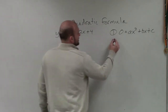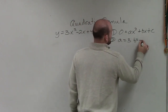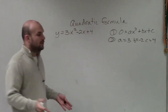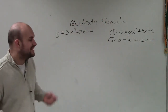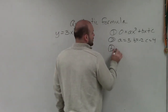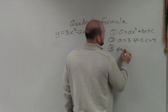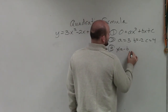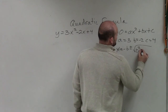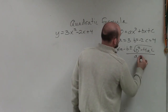The next thing you want to do is identify what a equals, what b equals, and what c equals. Once you identify your a, b, and c, you apply them into the quadratic formula, which is x equals negative b plus or minus the square root of b squared minus 4ac, all over 2a.